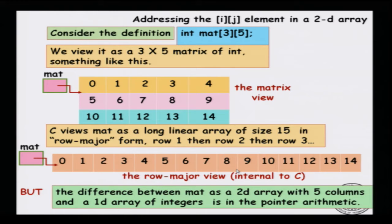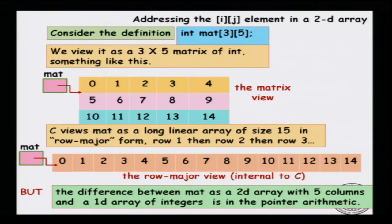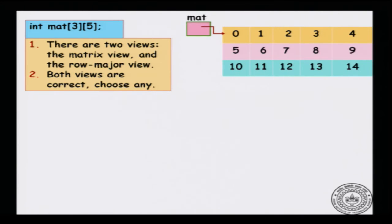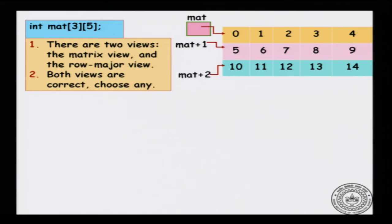The natural question to ask is whether a 2D array is really just a 1D array at its heart. The difference between a 2D array seen in row major form and an actual 1D array comes in the pointer arithmetic. There are two views — the matrix view and the row major view — and both views are correct. In the matrix view, mat is a pointer to the first row, so mat+1 is a pointer to the second row, and mat+2 is a pointer to the third row.